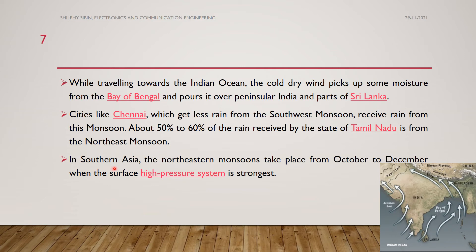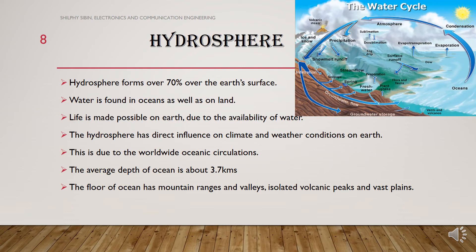In Southern Asia, the Northeastern Monsoon takes place normally from October to December when the surface high pressure is strongest. Next, we have a topic called Hydrosphere, also called Water Space. The Hydrosphere forms over 70% of the Earth's surface, and water is found in the oceans as well as on land. Without water, life is not at all possible, and the Hydrosphere has a direct influence on the climate and weather conditions of the Earth. This is due to worldwide oceanic circulations.